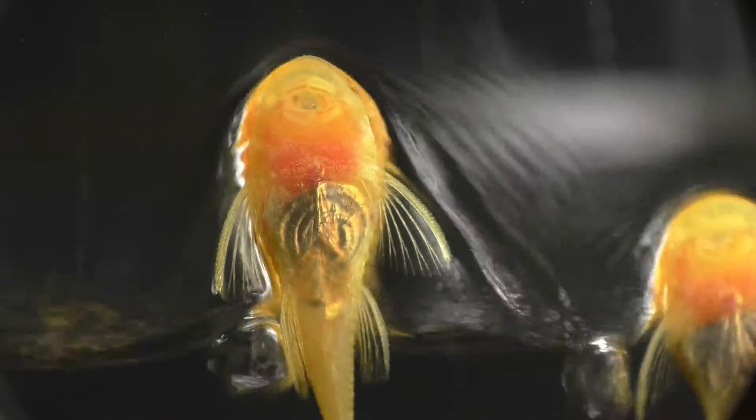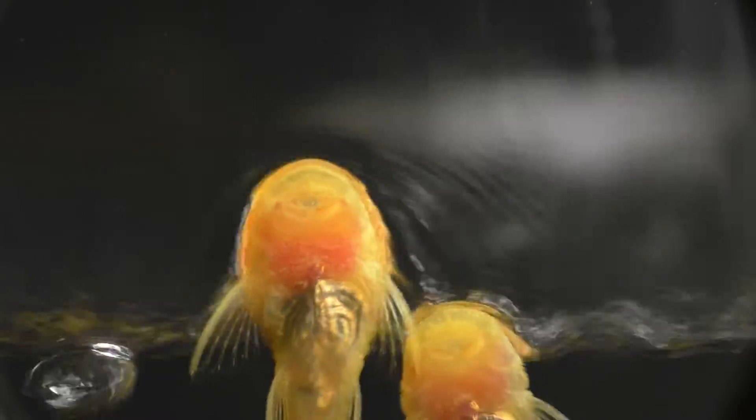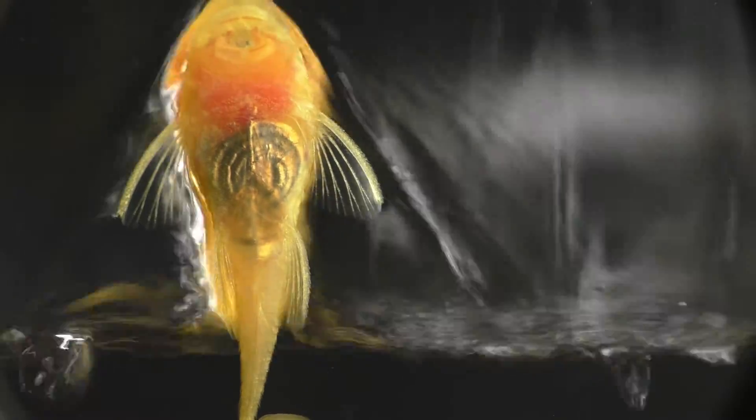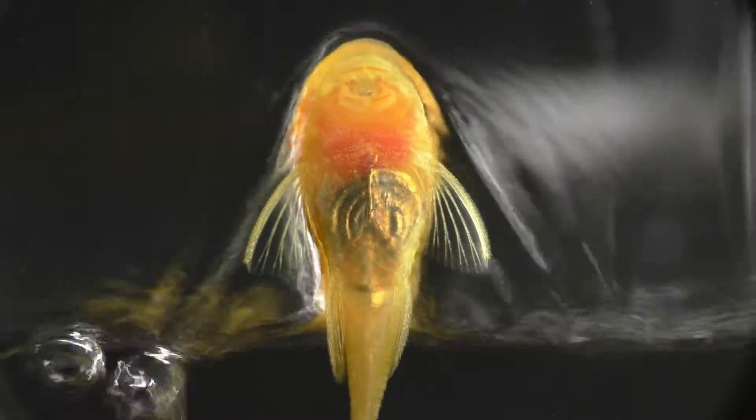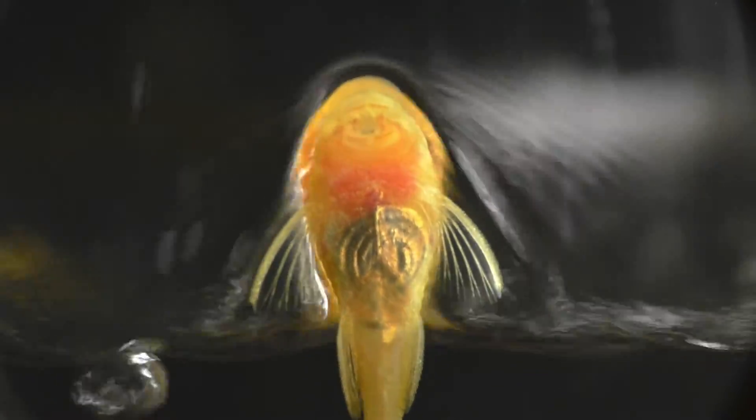If you recall in the earlier part of the video where the water was running down the center of the glass, the plecos were unable to climb above the waterline because the tail fin was the sole means of propulsion and it needed to be completely immersed in order to be effective. Then, when I switched the position of the hose to the corner of the tank where there was a bit more traction, the plecos were suddenly able to climb up the glass with very little trouble.